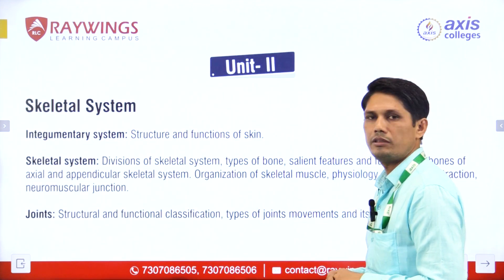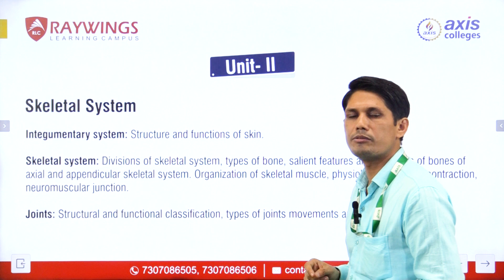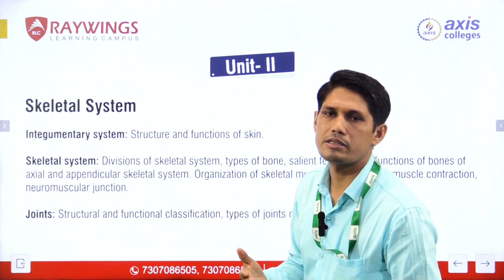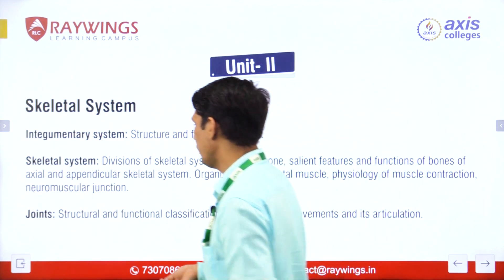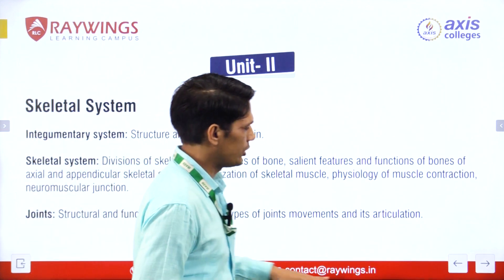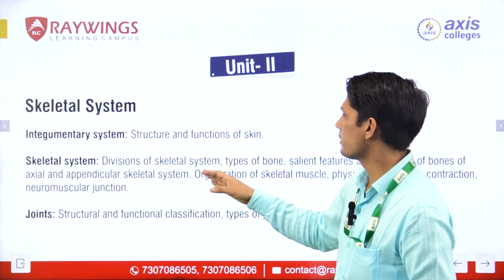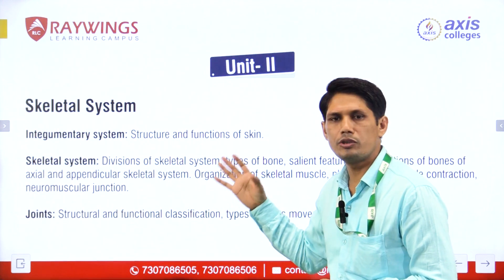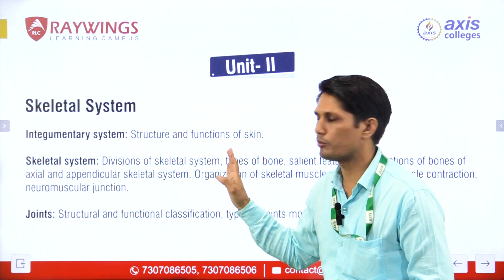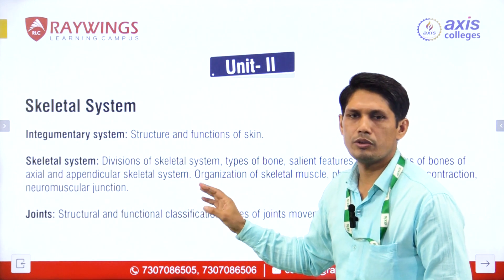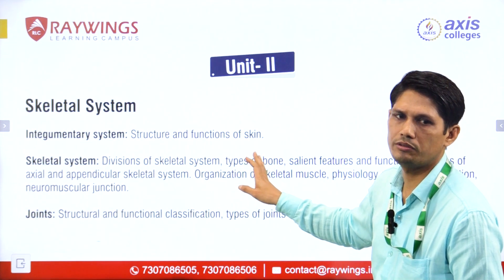This is the second unit. In the second unit, we will study skin and skin layers and functions, the skeletal system — divided into axial and appendicular skeleton systems — joints and types of joints, and movements of the articulations. This is the second unit of Human Anatomy and Physiology DP101T.